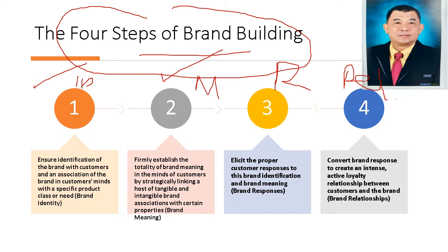In a nutshell, brand identity ensures the identification of the brand with customers and an association of the brand in customer minds with a specific product class or need. Customers can identify your brand — for example, iPhone. One of the endearing features is the security. Sometimes it is rejected in small cell phone repair booths to unlock an iPhone, because you can be tracked once you have this product, as it has a live GPS.